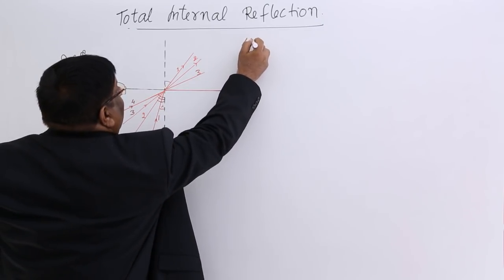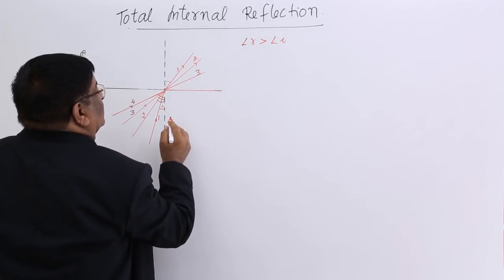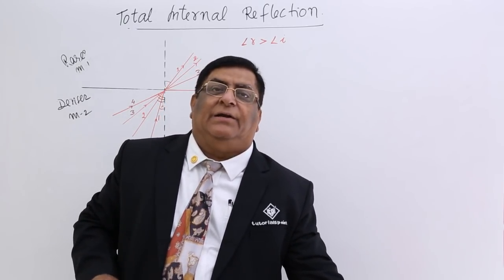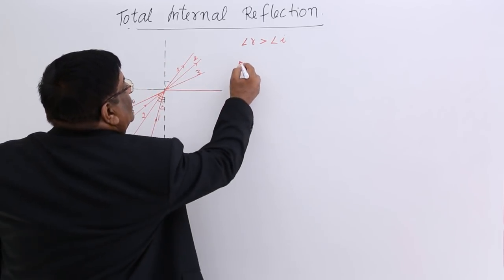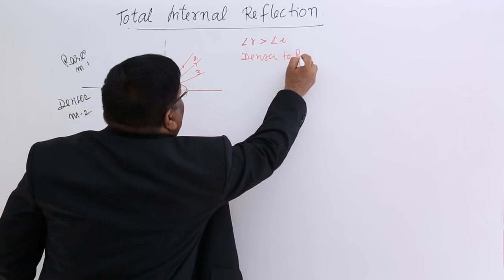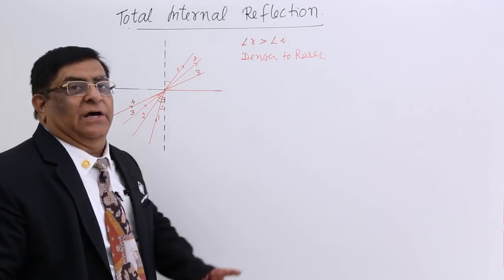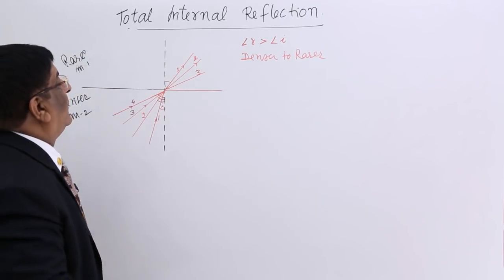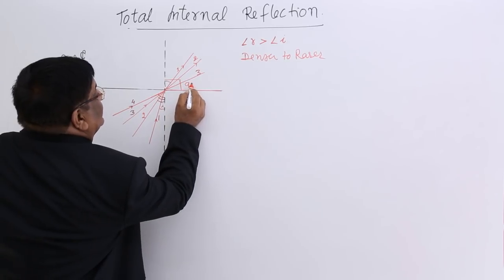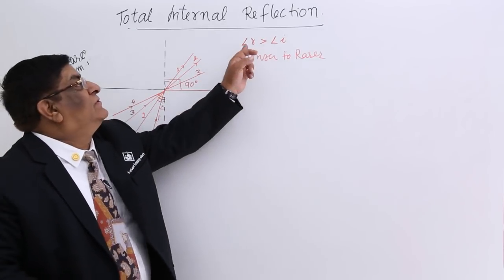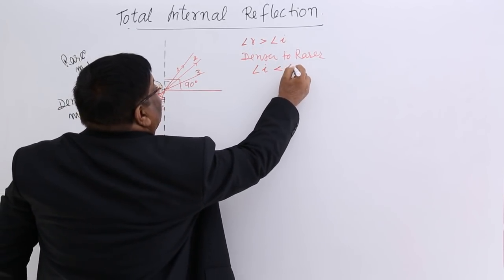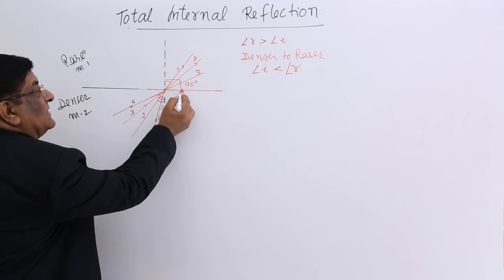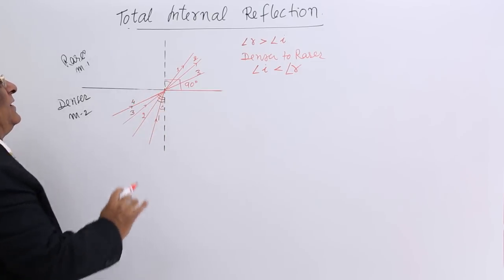We know that angle R is always greater than angle i because the rays of light are travelling from denser to rarer. If light goes from denser to rarer, it has to move away from the normal. So angle R will always be larger than angle i, and for some value of i, angle R will reach 90 degrees — first R reaches 90 degrees for this particular value of i.